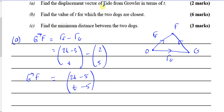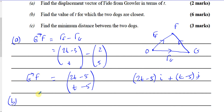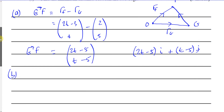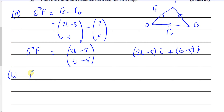So the displacement vector of Fido from Growler in terms of t can be written as (2t minus 5)i plus (t minus 5)j. And then part b: find the value of t for which the two dogs are closest — so basically they're closest when the distance between them is the minimum distance.